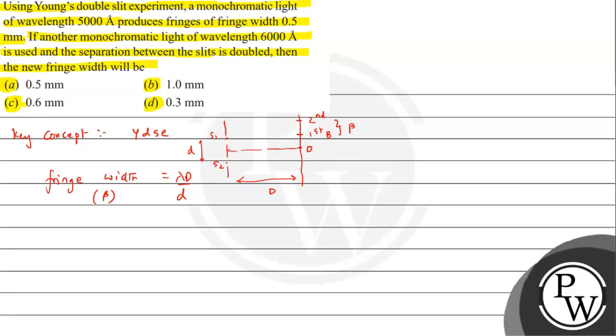Capital D we have kept constant, so here we can write that beta is directly proportional to lambda and beta is inversely proportional to small d. Because capital D is fixed, we don't have any changes, so we don't use proportionality for it.